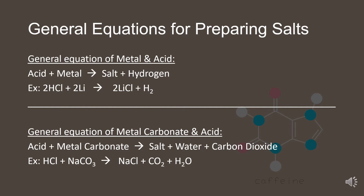The general equation of metal carbonate plus acid is: acid plus metal carbonate gives salt plus water plus carbon dioxide. For example, HCl plus Na₂CO₃ gives NaCl plus CO₂ plus H₂O. Hydrochloric acid plus sodium carbonate gives sodium chloride plus water plus carbon dioxide.